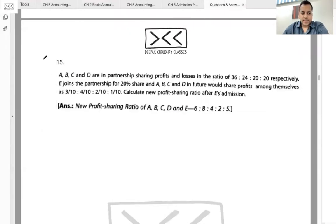Question number 15, easier but important language. A, B, C, D are four partners sharing in the ratio 36:24:20:20.